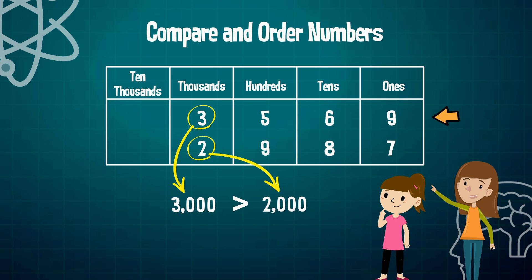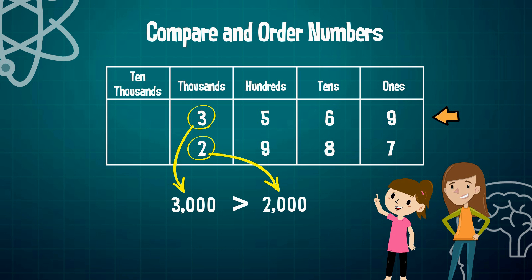So now use one of our symbols to show which number is greater. Got it. I would write this as 3569 is greater than 2987. Phenomenal.